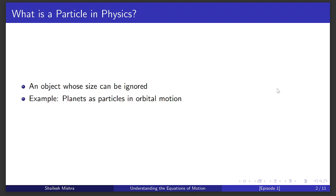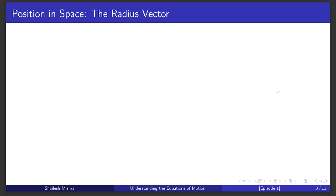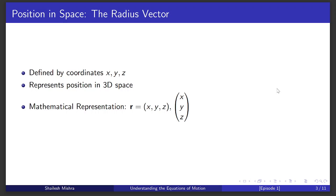A particle's position is described by something called a radius vector, labeled as R. This vector consists of three numbers x, y, and z, which are like addresses telling us where the particle is in space.